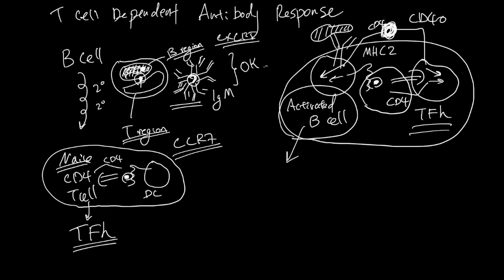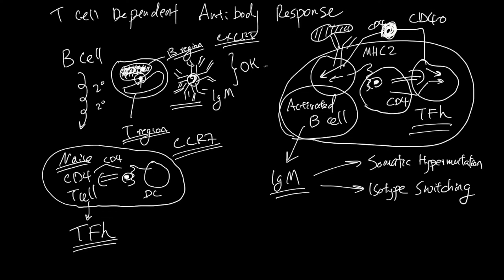It does this by two processes called somatic hypermutation and isotype switching. In this B region, this reactivated B cell will have clones and copies and make more, and as it makes clones the somatic hypermutation process is going to mutate the genomic region that codes for the variable region of the antibody.